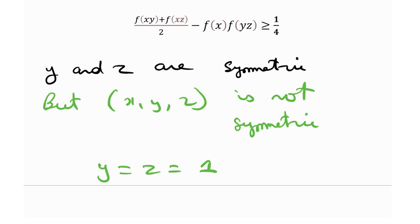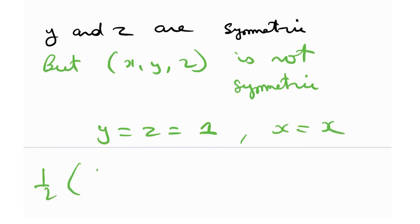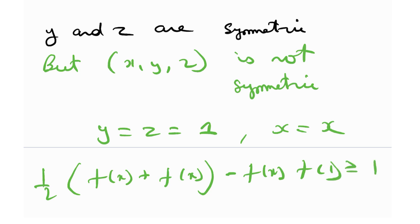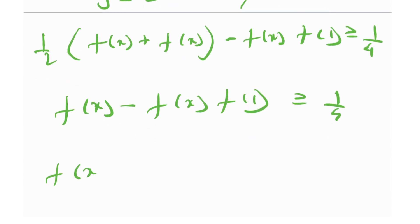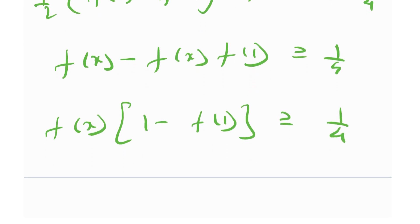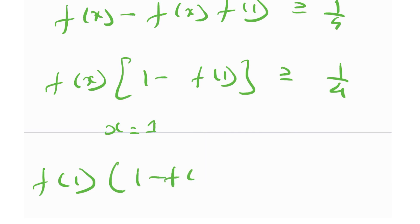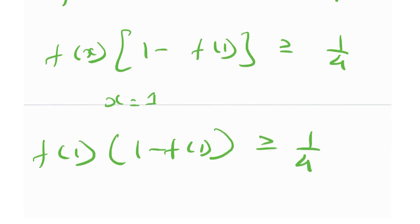Choosing y = z = 1 and x = x, we get: (1/2)(f(x) + f(x)) − f(x)·f(1) ≥ 1/4. That means f(x) − f(x)·f(1) ≥ 1/4, which implies f(x)·(1 − f(1)) ≥ 1/4. Plugging in x = 1, we get f(1)·(1 − f(1)) ≥ 1/4. You could also have arrived at this by substituting x = y = z = 1 directly in the original inequality.